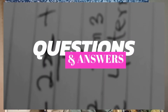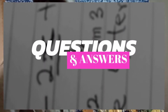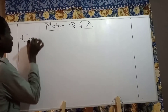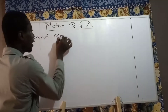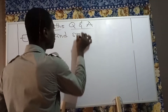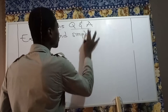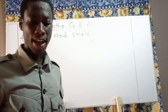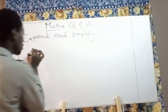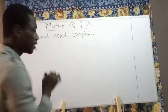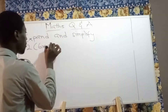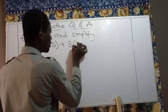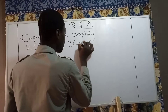Welcome to our next Q&A session under Algebraic Expression. Our question is: expand and simplify the algebraic expression 2 multiplying 6x minus 5, then plus 3 multiplying 2x minus 1.